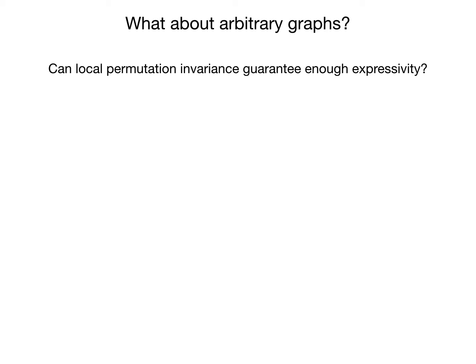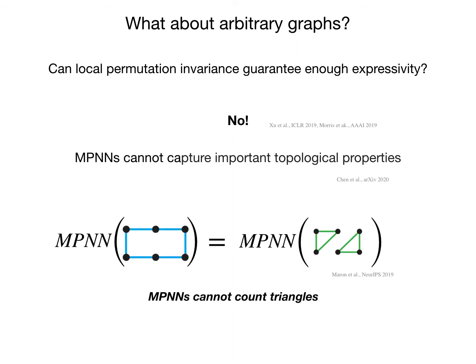Now, the question that naturally arises is if local permutation invariance can guarantee enough expressivity for arbitrary graphs. It has been shown in a series of recent works that the answer is no, and the most important consequence is that MPNNs cannot capture important topological properties. In the example I show here, MPNNs will think that these two graphs are isomorphic, although they are clearly non-isomorphic. The reason is that the graph on the right has two triangles while the graph on the left has none. Thus, MPNNs cannot count triangles; otherwise they would be able to disambiguate these two graphs.